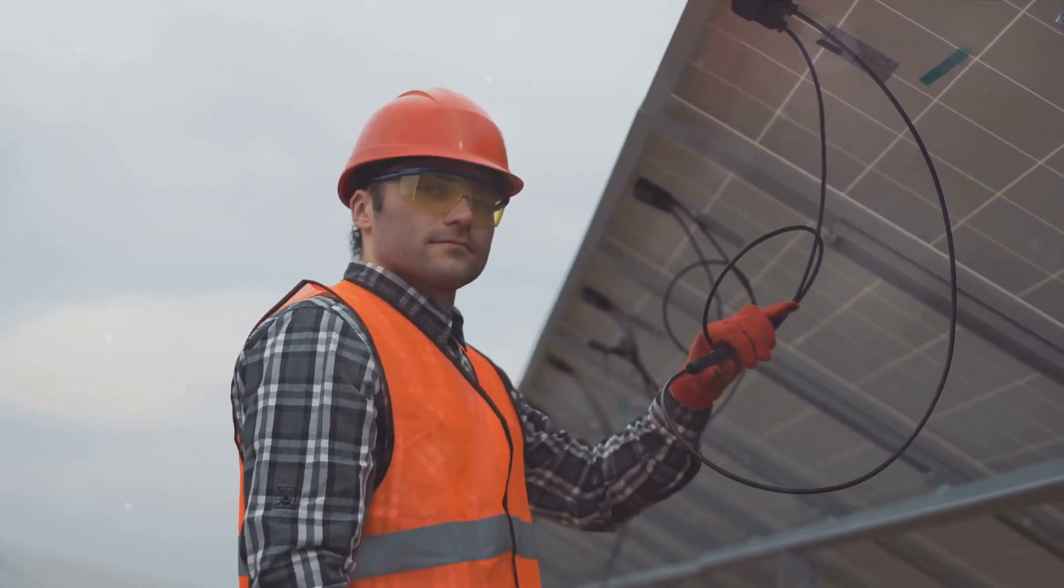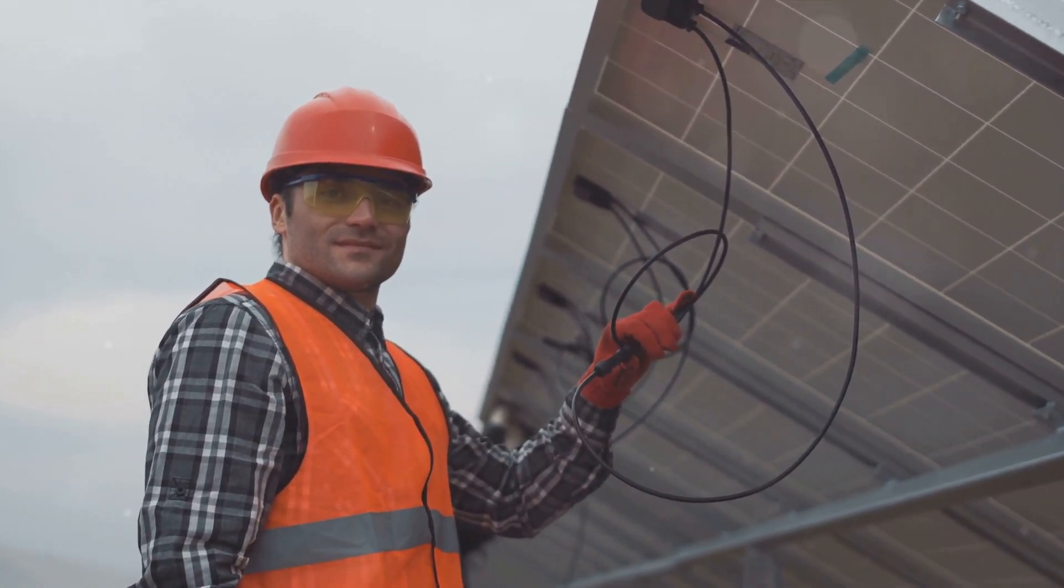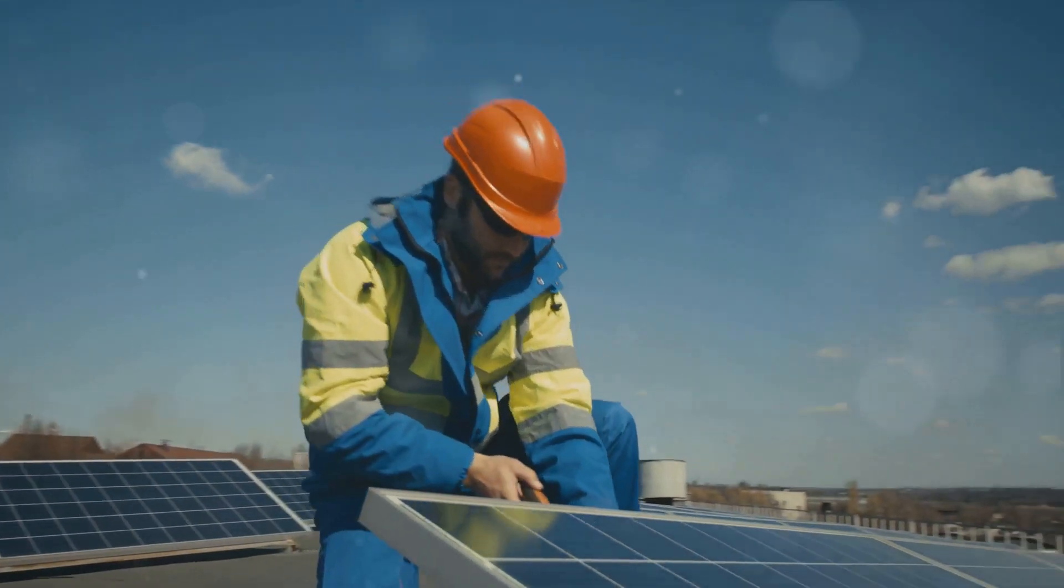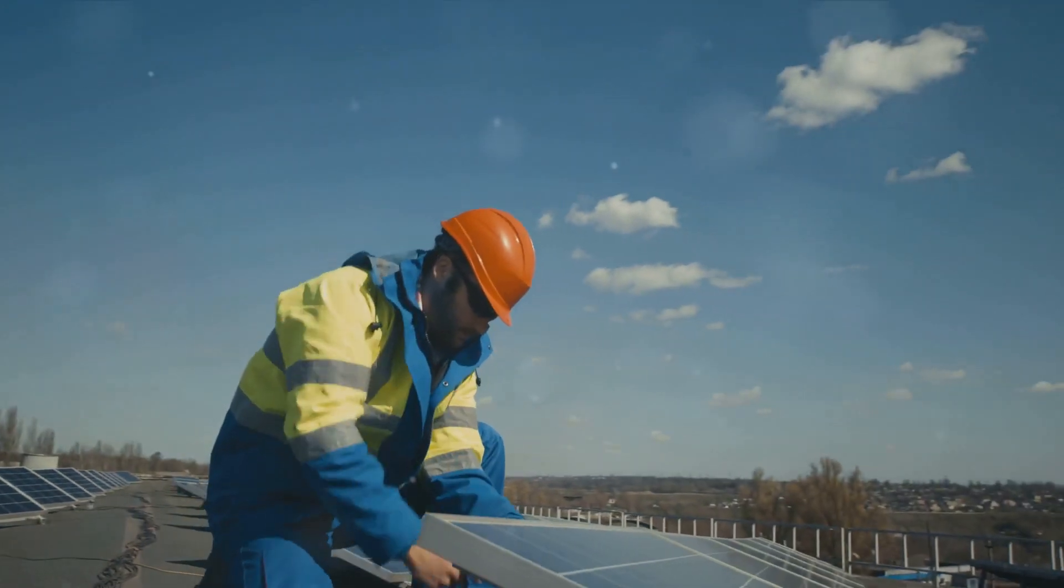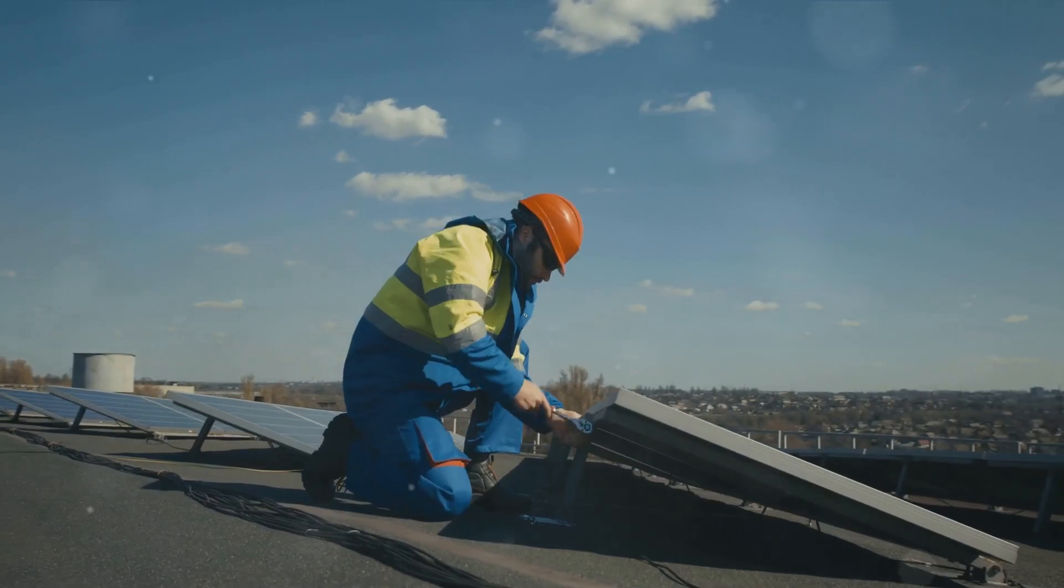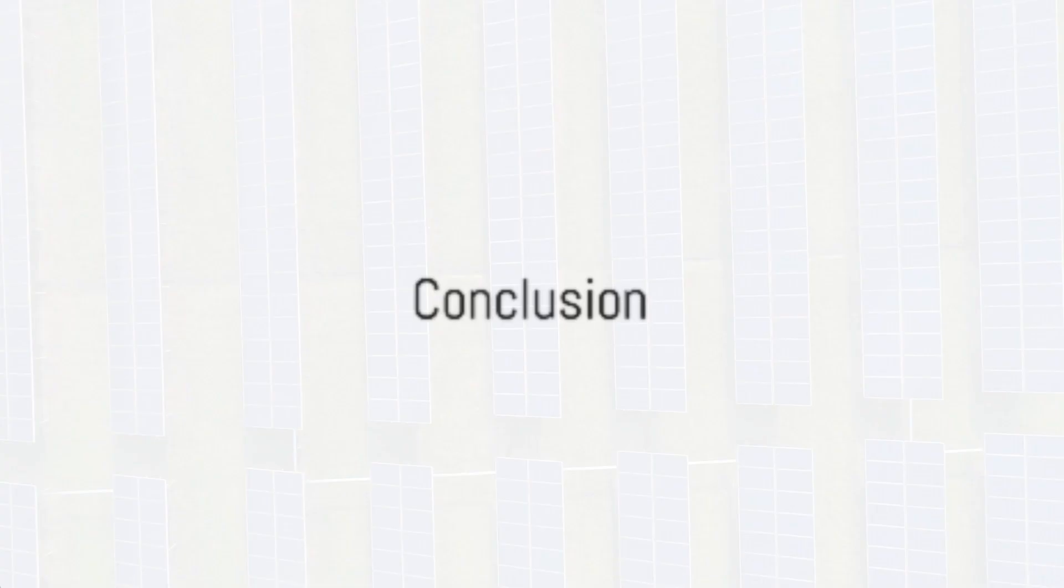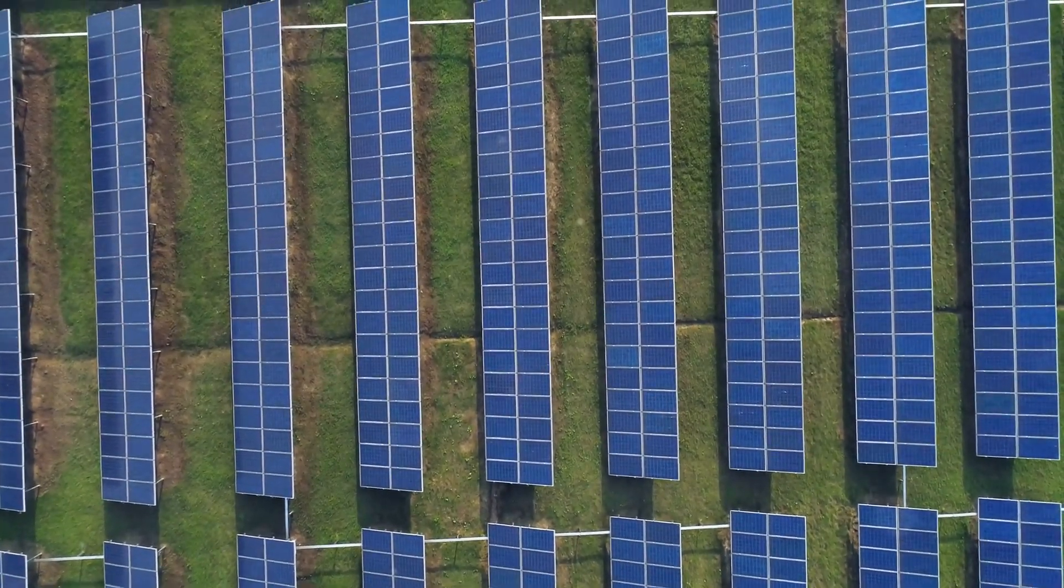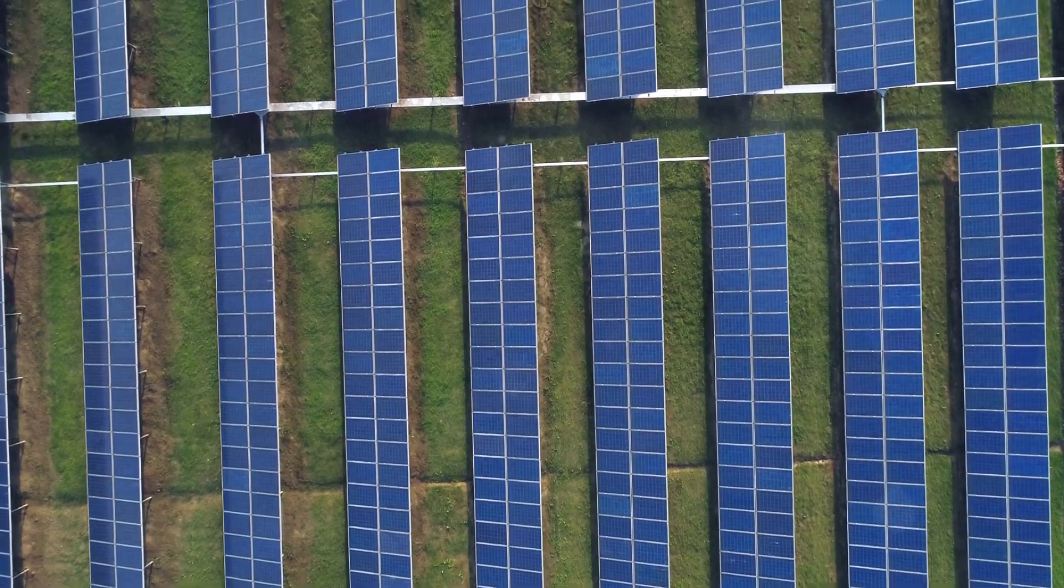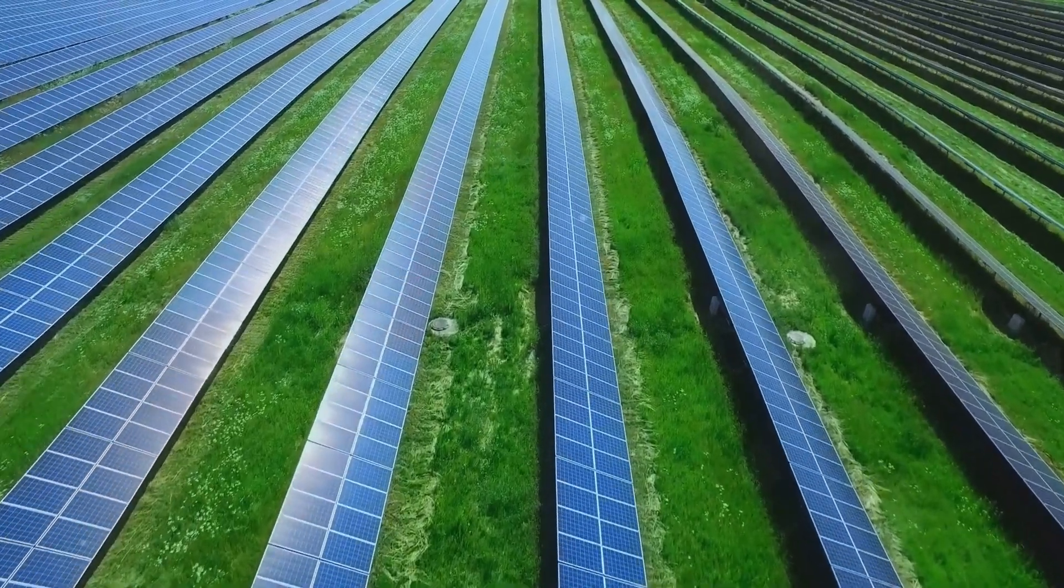This might seem like a complex process, but it's a testament to the incredible strides we've made in the field of renewable energy. Each step is a crucial piece of the puzzle in our quest to harness the power of the sun, helping us march towards a more sustainable future, one solar panel at a time. So there you have it, the intricate process of creating a solar cell from start to finish. Let's take a moment to appreciate the complexity and the ingenuity involved in this process. We begin with a raw material as simple as quartz sand.